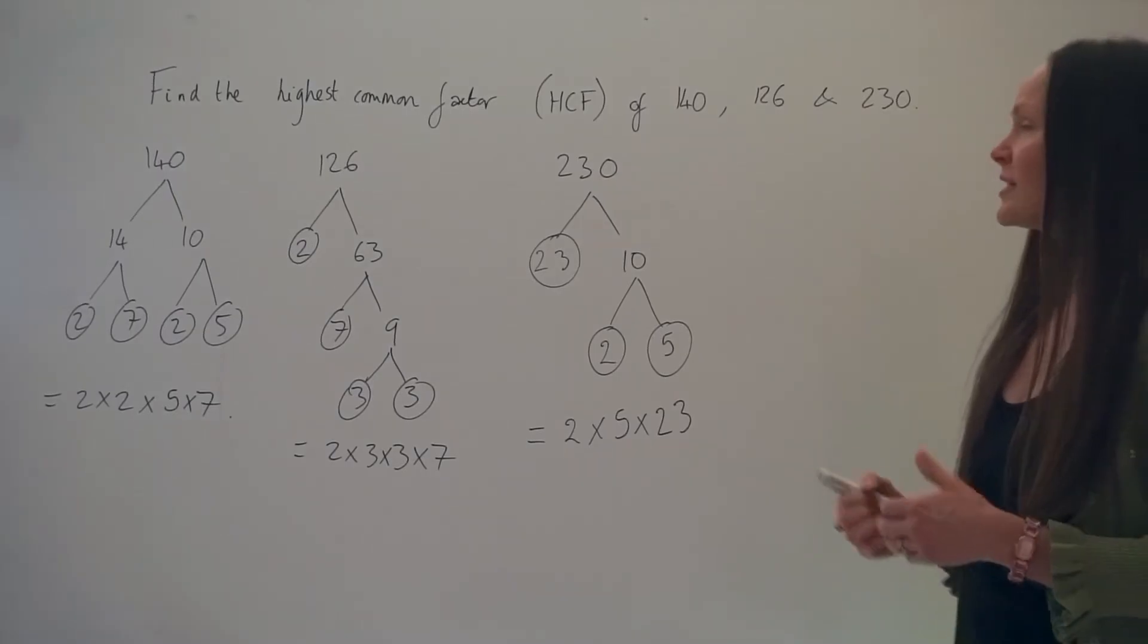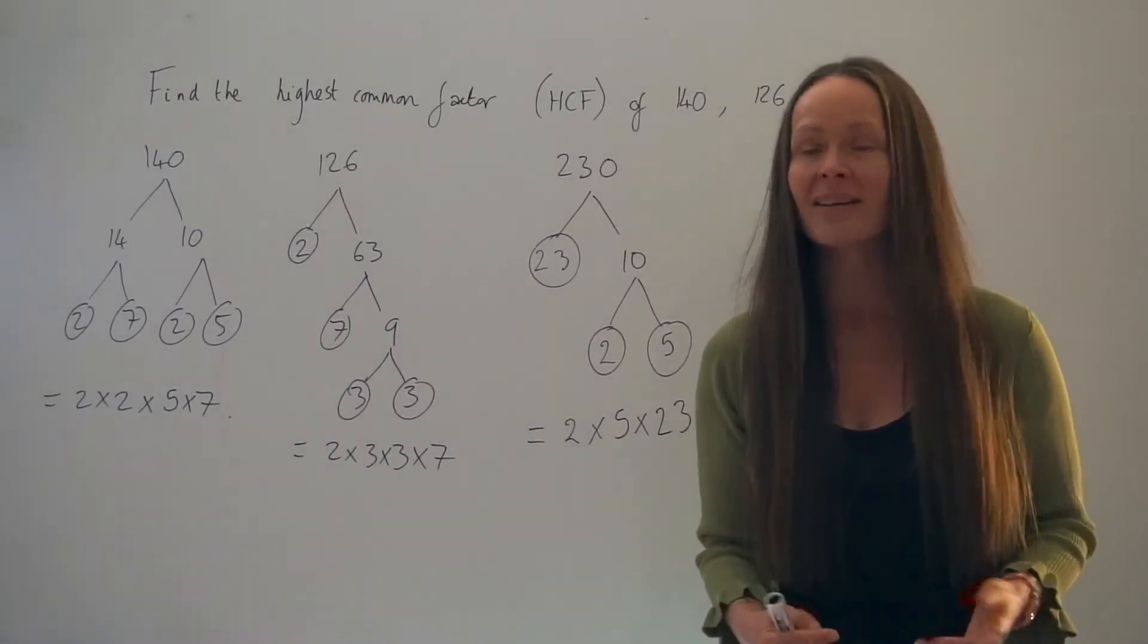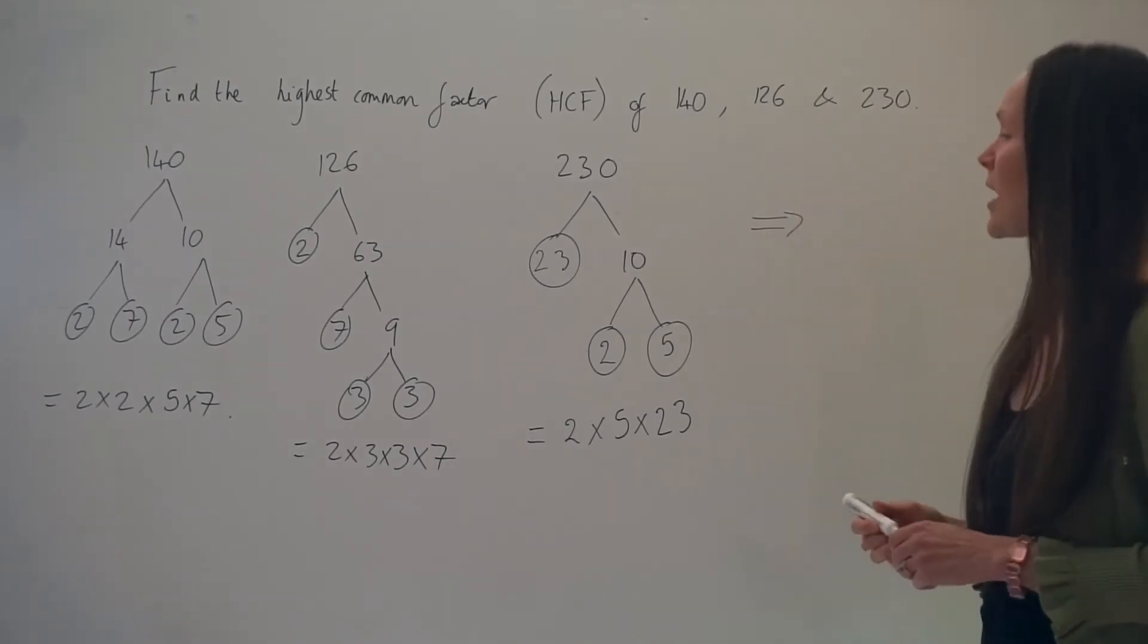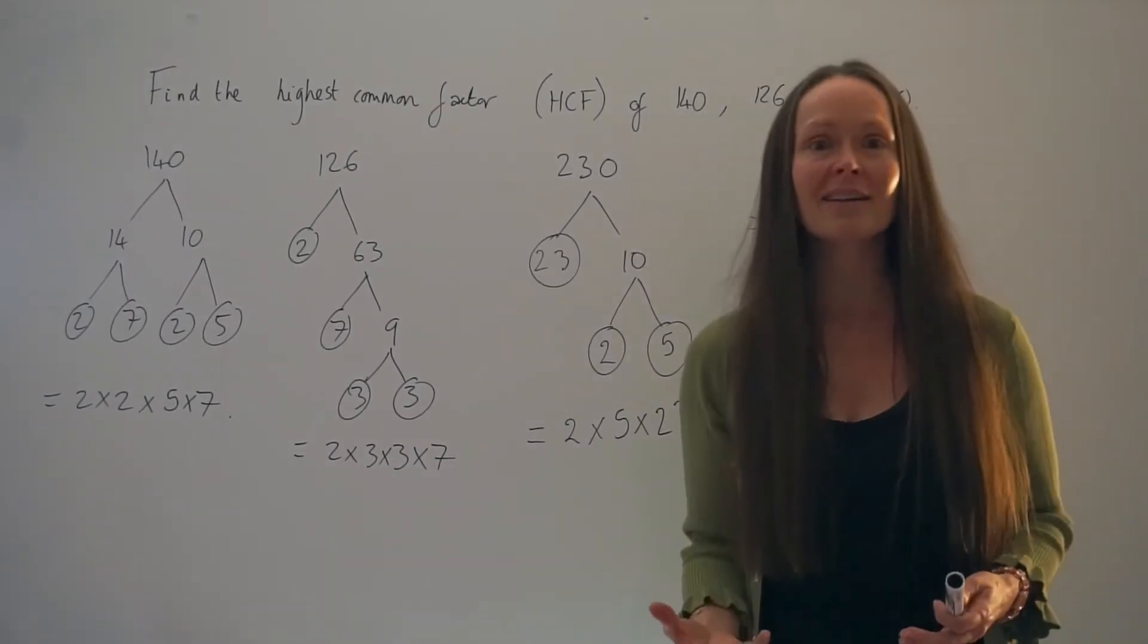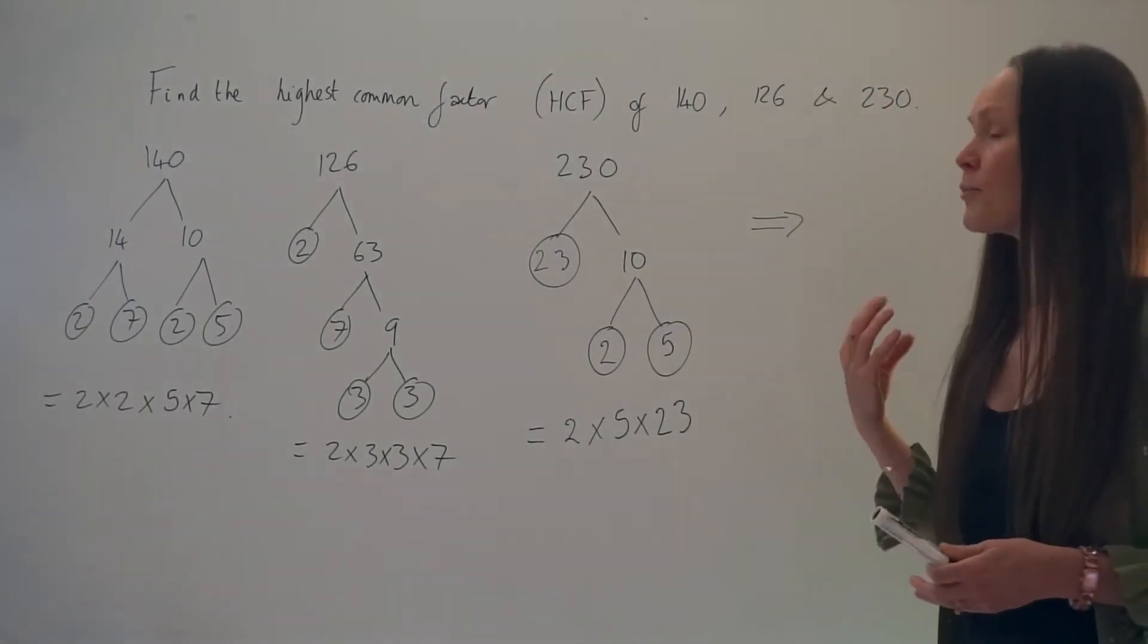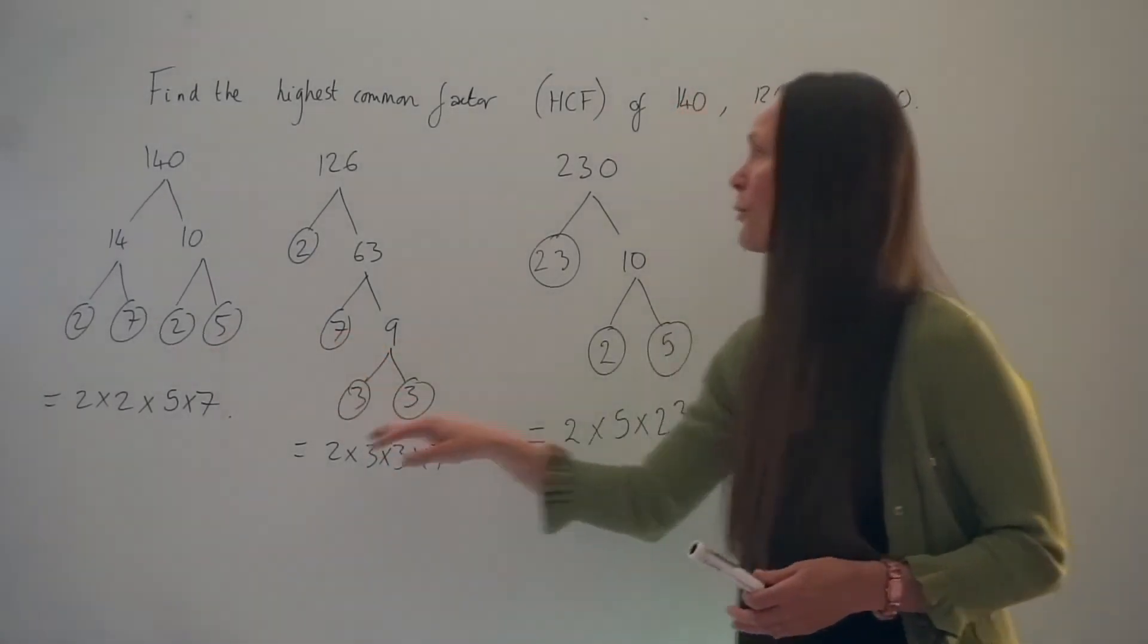The method is just like in part 1: if you need to find the highest common factor, you have to find the common prime factors and multiply them together. It has to be a prime factor that's common to all three numbers.